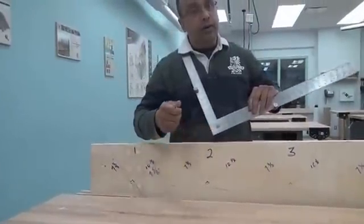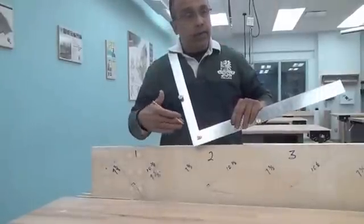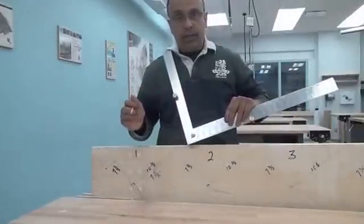So now we just cut the stringer out or the carriage. We duplicate it or triplicate it, depending on how many we need, and then we can build our set of stairs.